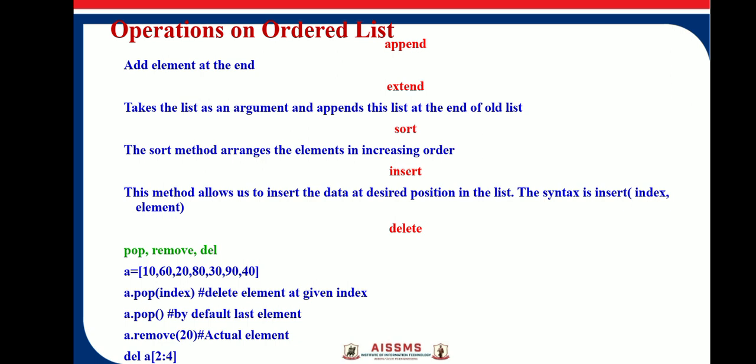The difference between pop, remove, and del is: pop and del remove the element and return the removed value to the calling function, while remove only removes the element without returning a value. For example, a.pop(index) deletes the element at a given index; a.pop() by default removes the last element; a.remove(20) removes the actual element 20 from the list; and del a[2:4] removes multiple elements at indices 2, 3, and 4.